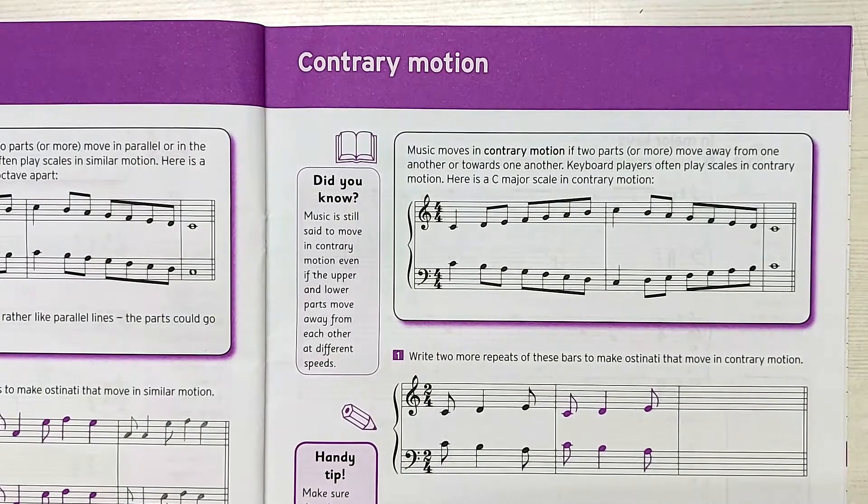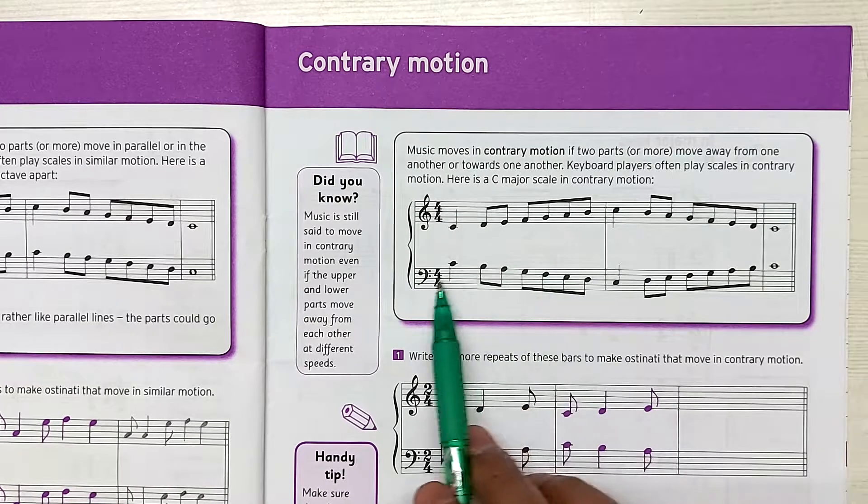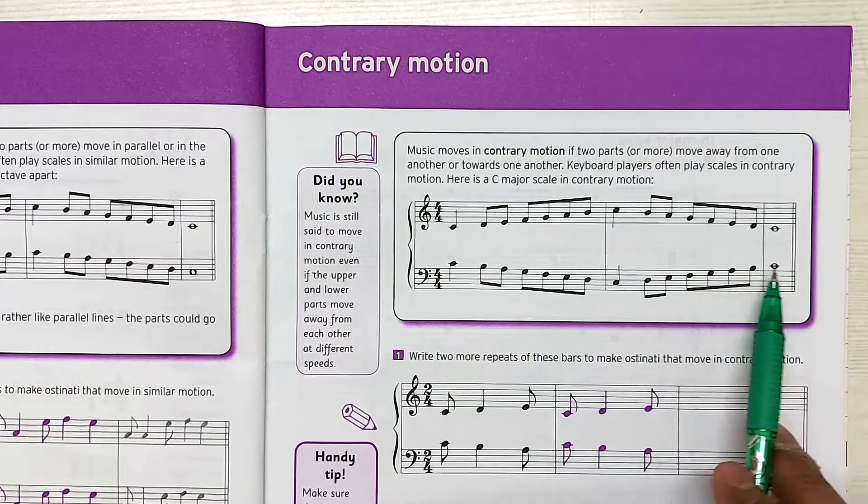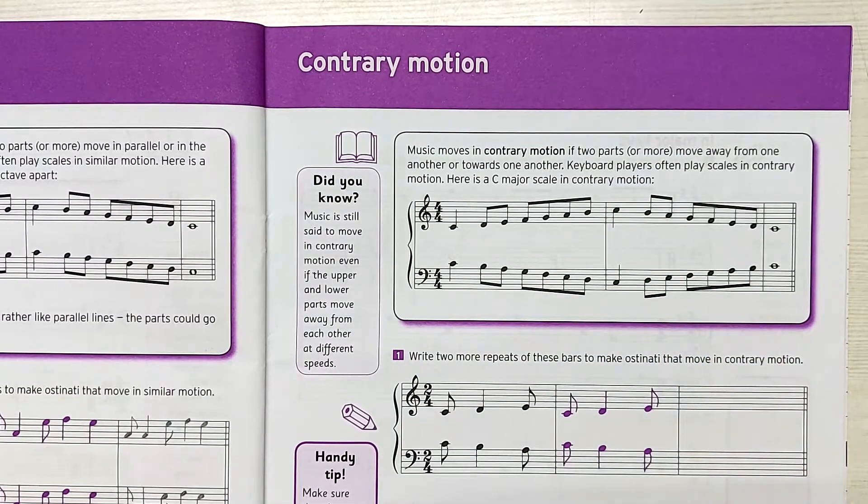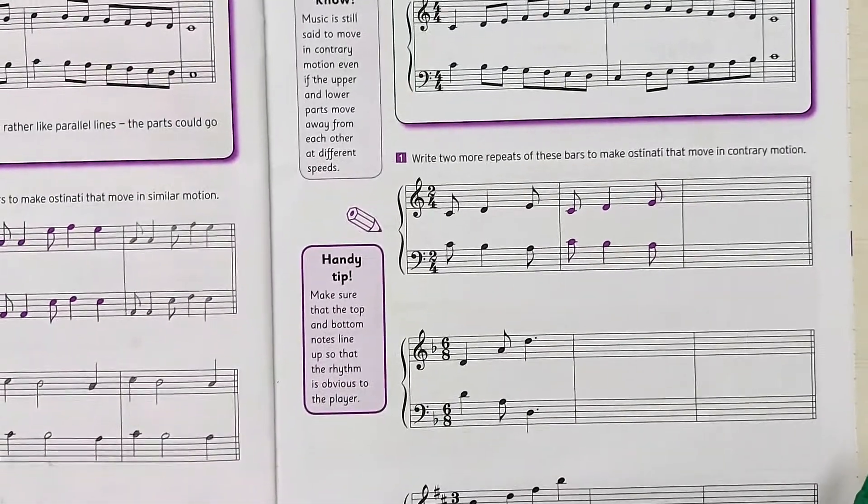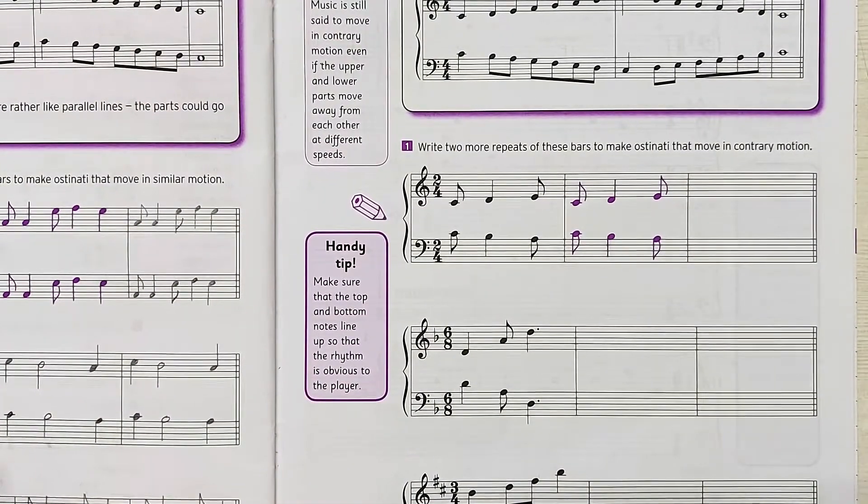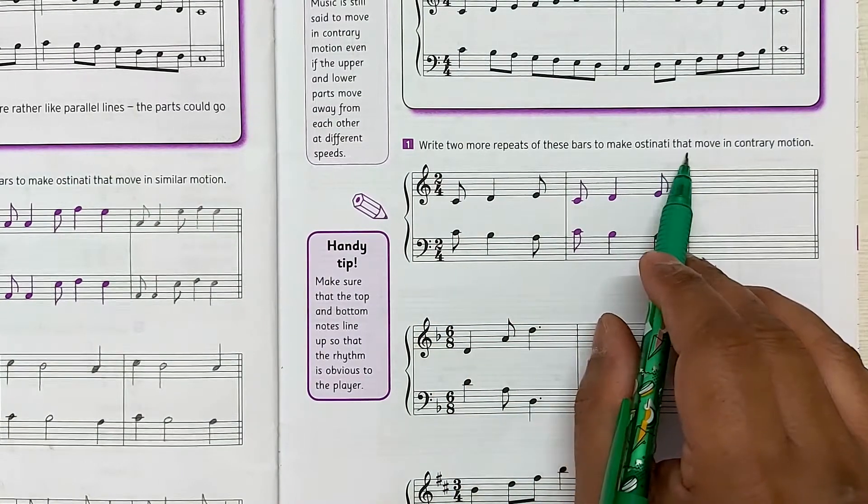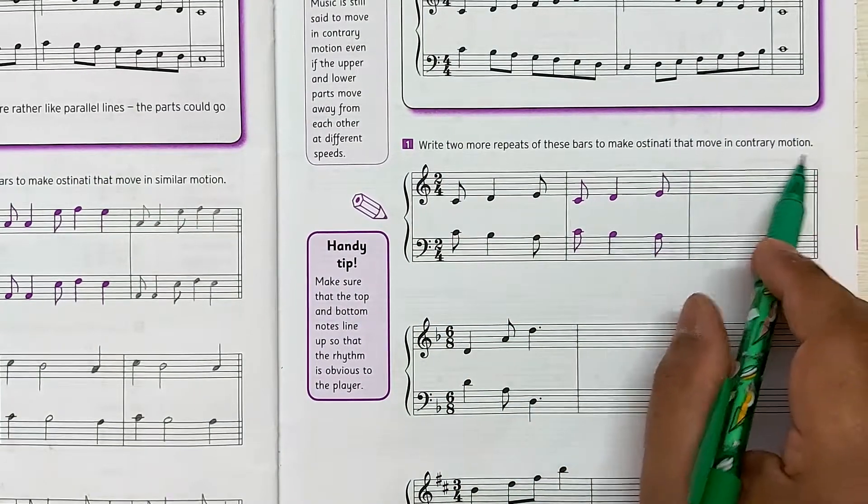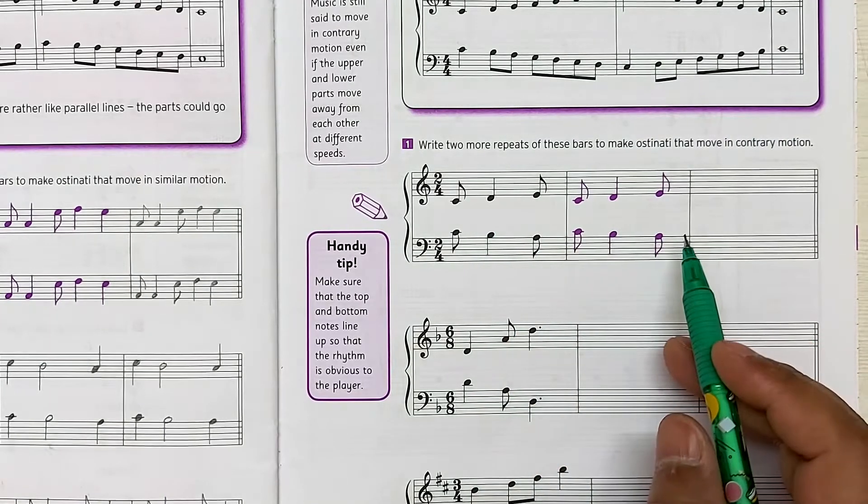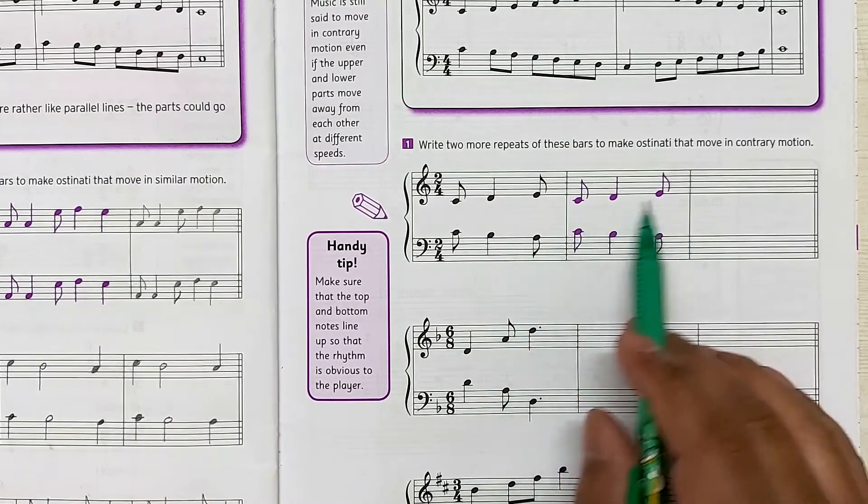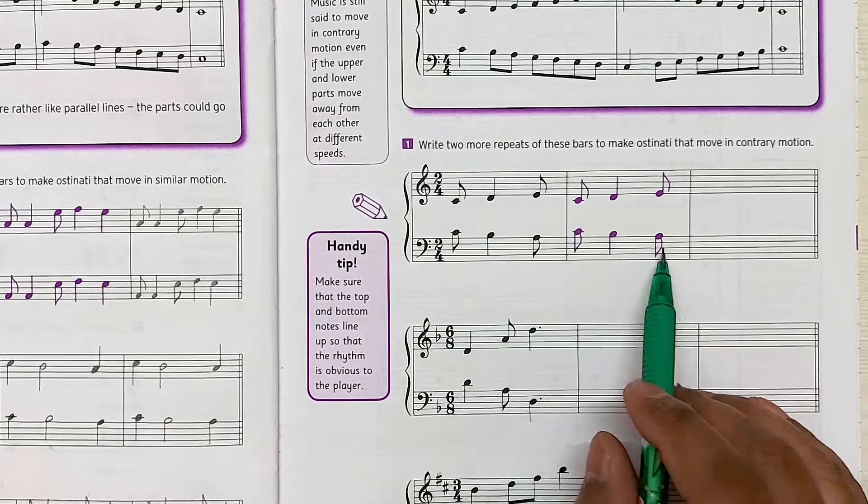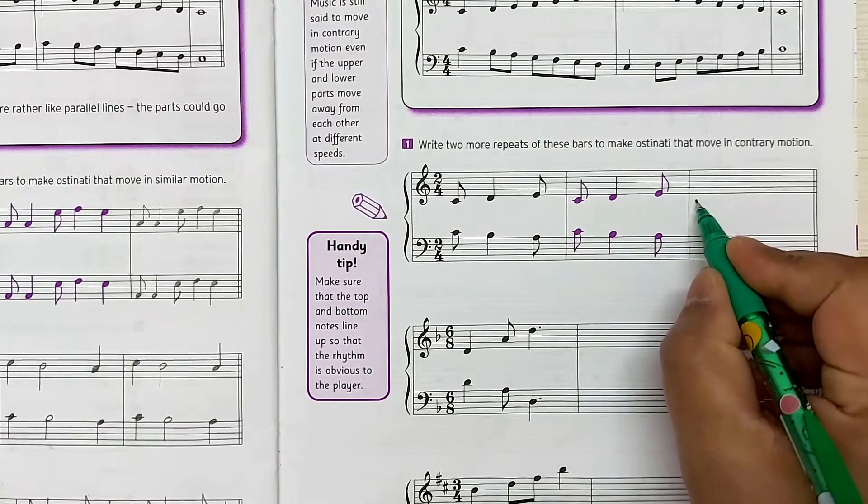So according to theory, you can see they're going away from each other and then they're coming towards each other. So let's do the exercise today. It's simple, not to be worried about this topic. They're saying write two more repeats of these bars to make ostinato that moves in contrary motion. We have to repeat the bars again because they're already showing in the contrary motion. So we just have to repeat it again.